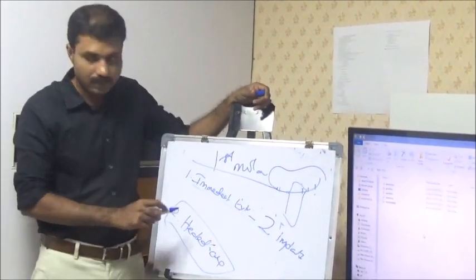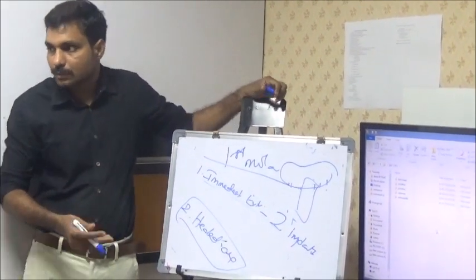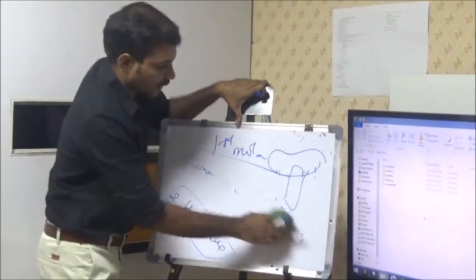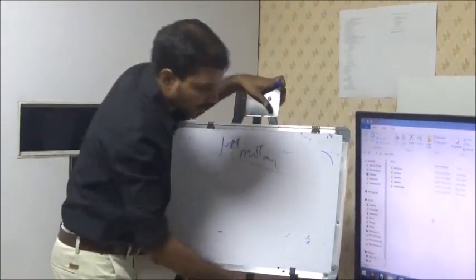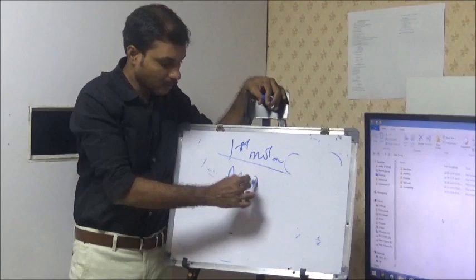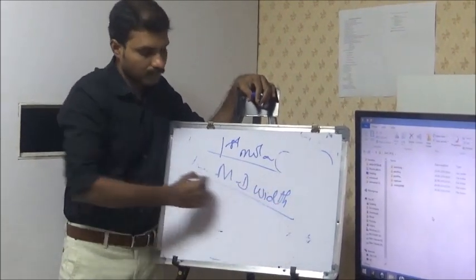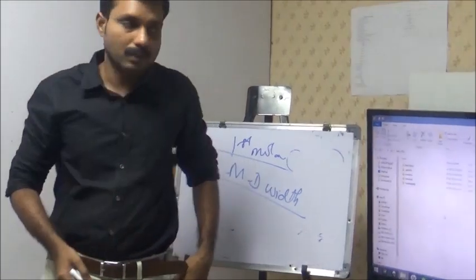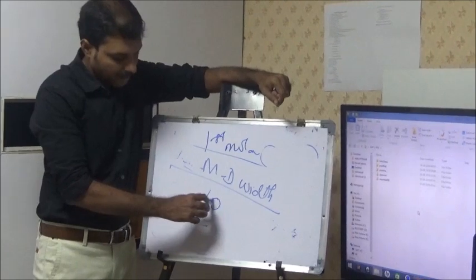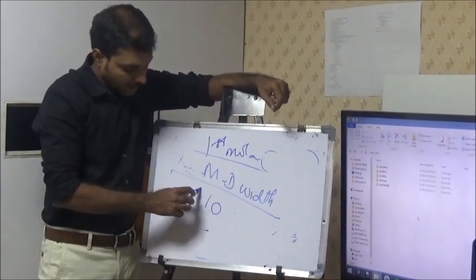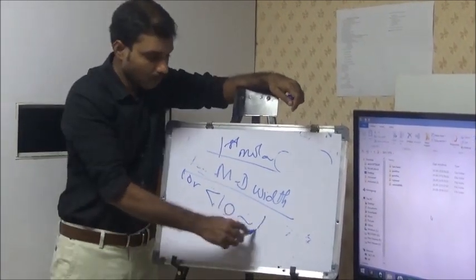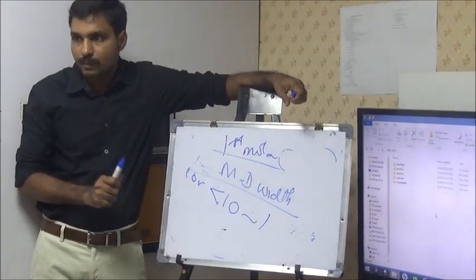So what about the healed cases? We will extract three months back or three years back. So here the rules are slightly different. So the first thing we have to do is, take a periodontal probe or a scaler, and measure the mesio-distal width between 5 and 7. If it is 10 or less than 10, then only one implant is enough.